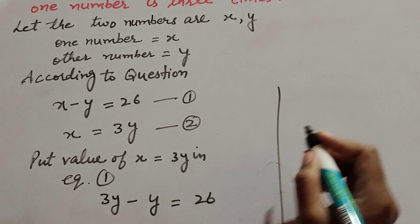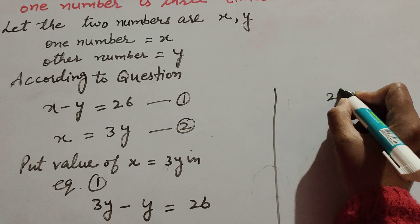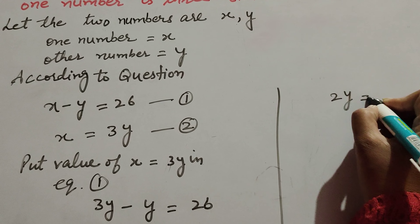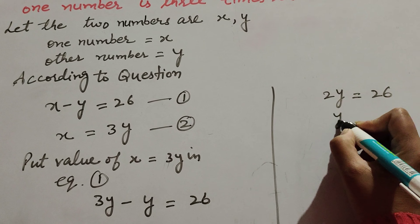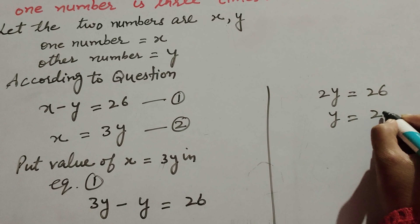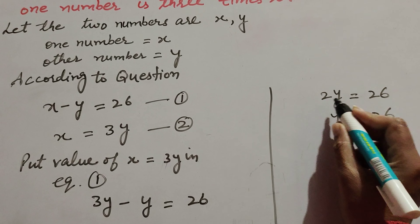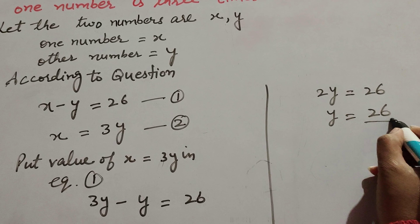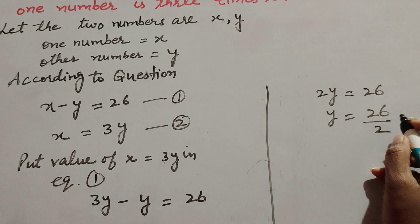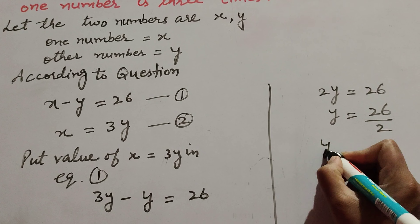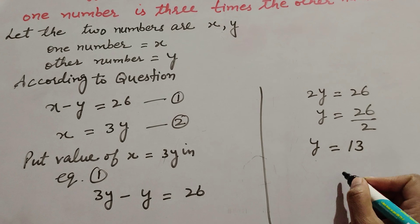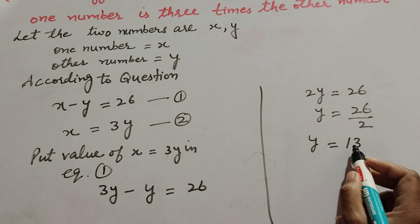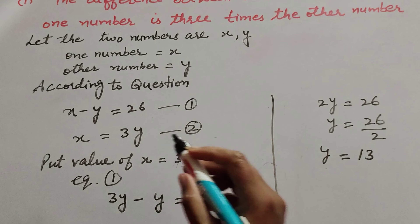Three y minus y equals two y, so two y equals 26. Transposing 2 to the right-hand side, it divides, giving y equals 13. So we find the value of y is 13.